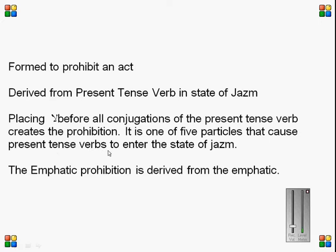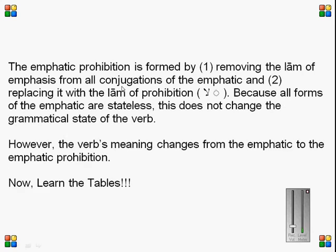La is one of the five particles that cause the present tense verb to enter the state of jazm. The emphatic prohibition is derived from the emphatic, as shown on the next slide. It is formed by removing the lam of emphasis — lam of ta'kid — from all conjugations of the emphatic and placing it with the lam of prohibition. Since all of the emphatic forms are stateless, this does not change the grammatical state of the verb; however, the verb's meaning changes from emphatic to emphatic prohibition.